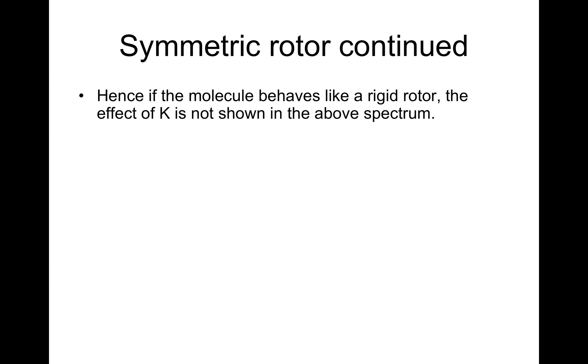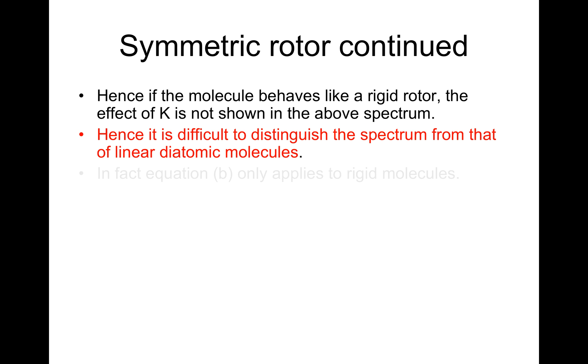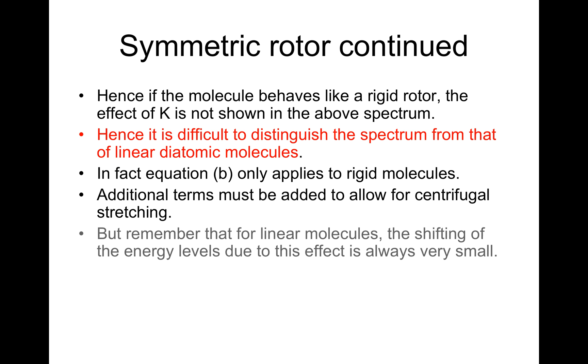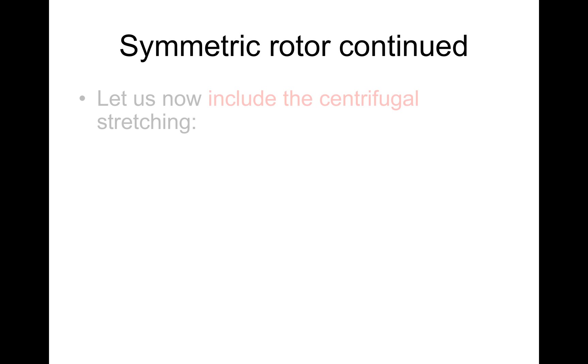Hence, if the molecule behaves like a rigid rotor, the effect of K is not shown in the above spectrum. It is difficult to distinguish the spectrum from that of a linear diatomic molecule. In fact, equation B only applies to rigid molecules. Additional terms must be added to allow for centrifugal stretching, just like before. But remember that for linear molecules, the shifting of the energy levels due to this effect is always very small.